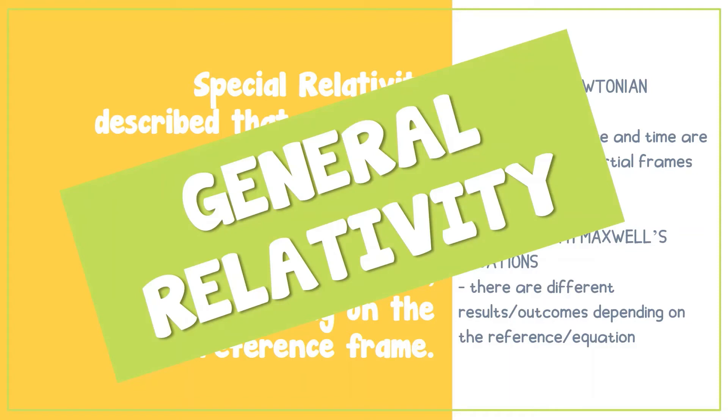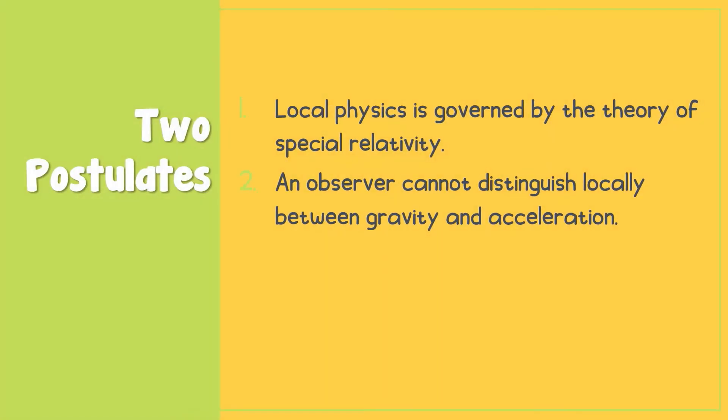Now let us discuss another theory of Einstein, which is the general relativity theory. General relativity has two postulates. First, local physics is governed by special relativity. And second, an observer cannot distinguish locally between gravity and acceleration.